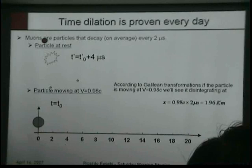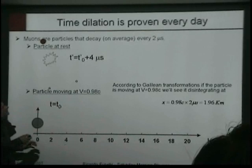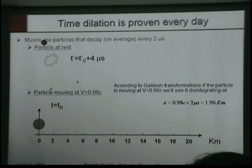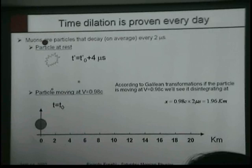And what happens is, because the velocity is so high, the gamma factor is about five. That means the time dilation is about five. Instead of decaying, instead of living two microseconds, in our reference frame we see the time as being ten microseconds, because it's multiplied by a factor of five.